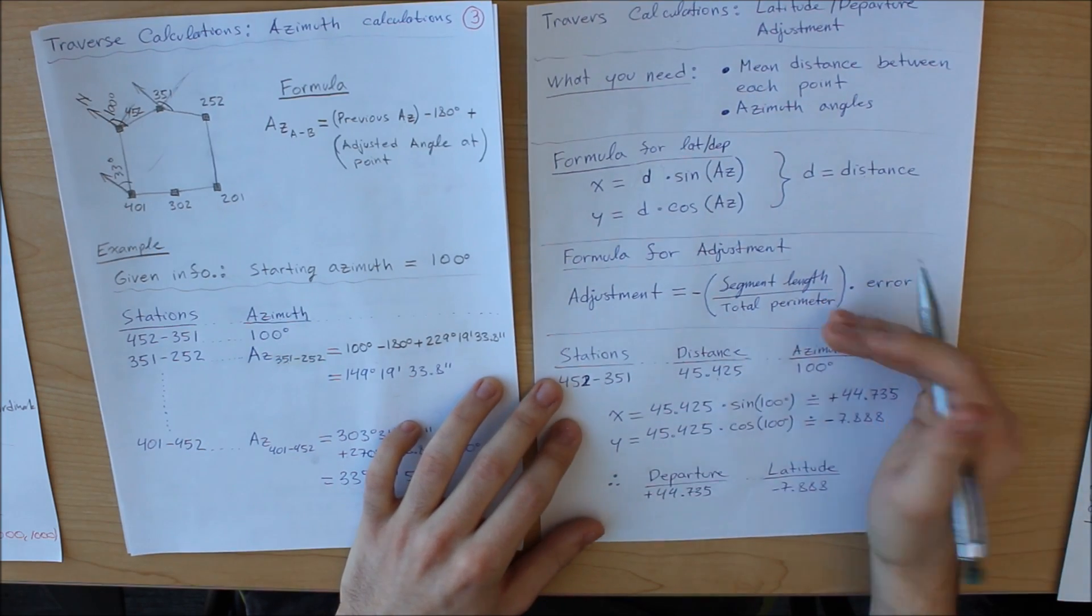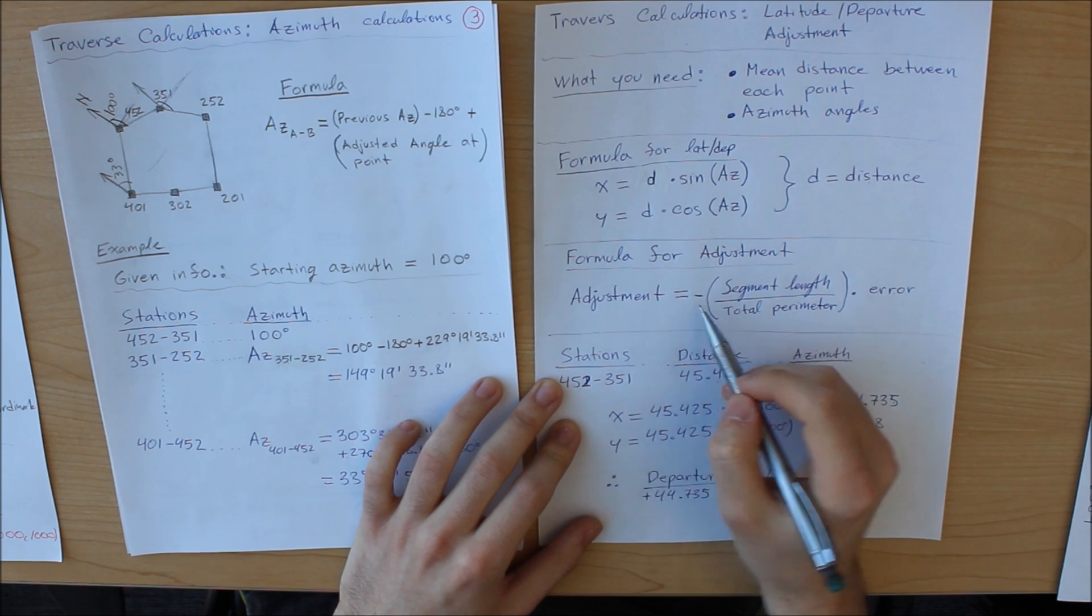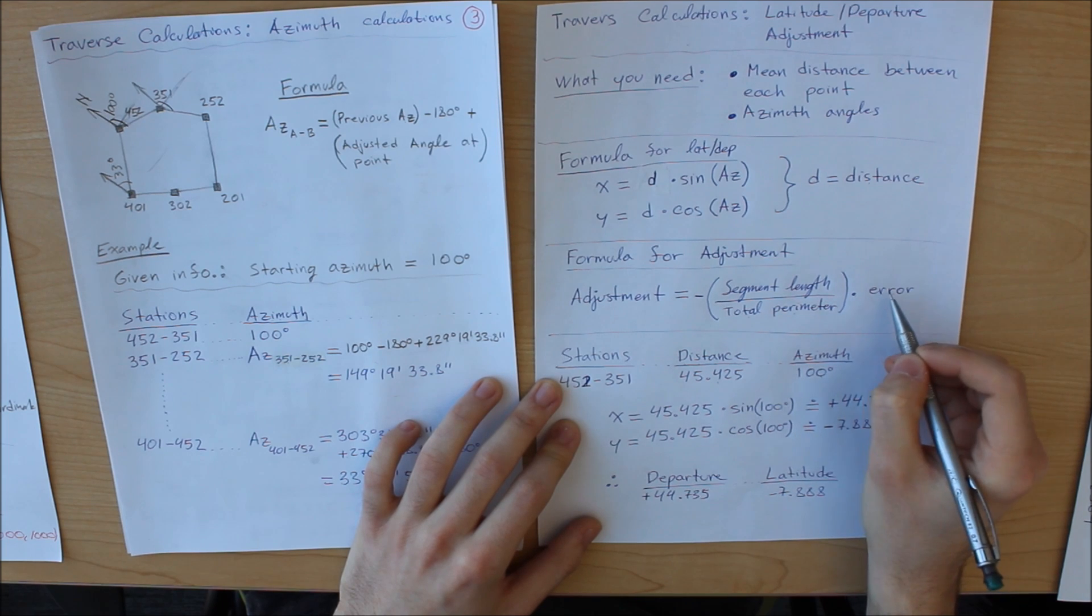Now the main formula for the adjustment is this right here, the adjustment formula. That is equivalent to negative segment length divided by total perimeter, multiplied by your error.